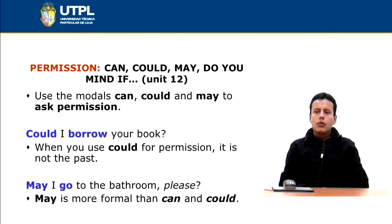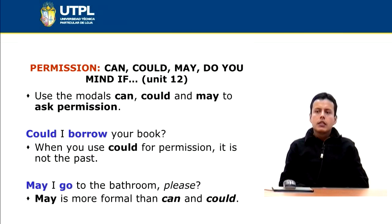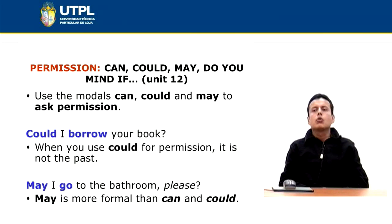For example, if you say 'Could I borrow your book?' — in this case, you are asking for a book. When you use could for permission, it is not the past. I'm not using could to refer to the past; I am using could for permission — to ask for a book.